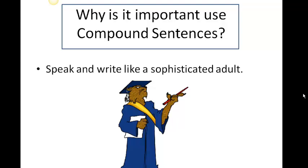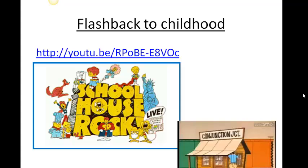Why is it important to use compound sentences? Well, if you'd like to start to speak and write like a sophisticated adult writer, you'd like to use longer sentences — and one way to create longer sentences is to link together two independent clauses. For a flashback to your childhood, it'd be fun to take a look at the YouTube video from Schoolhouse Rock called 'Conjunction Junction, What's Your Function?' Not only is it a fun way to reminisce about how we saw conjunctions presented to us as children, it's also a great catchy song that you'll remember when connecting your independent clauses.